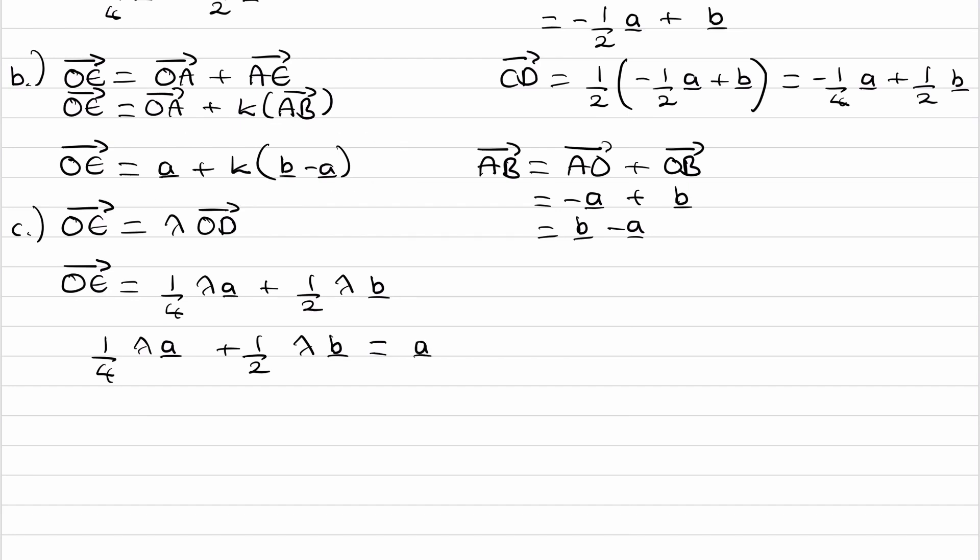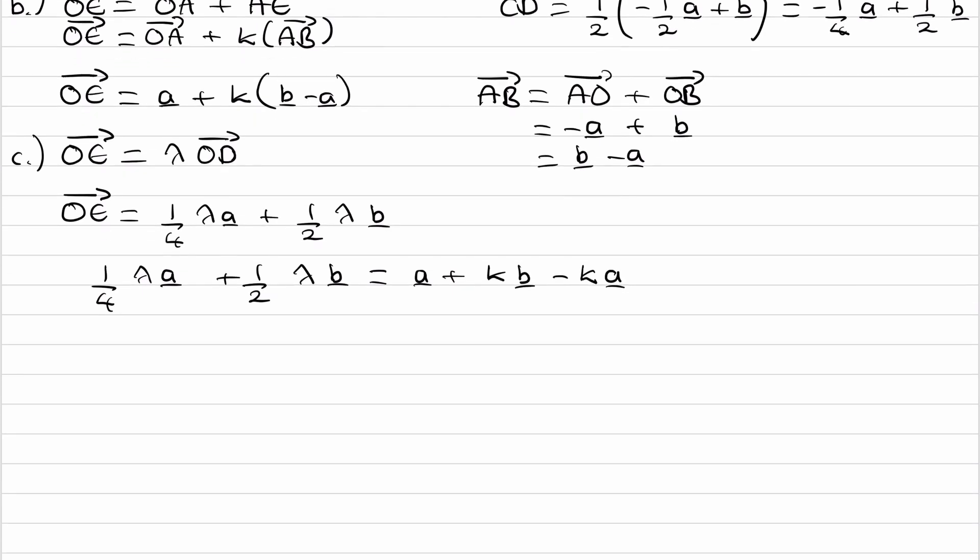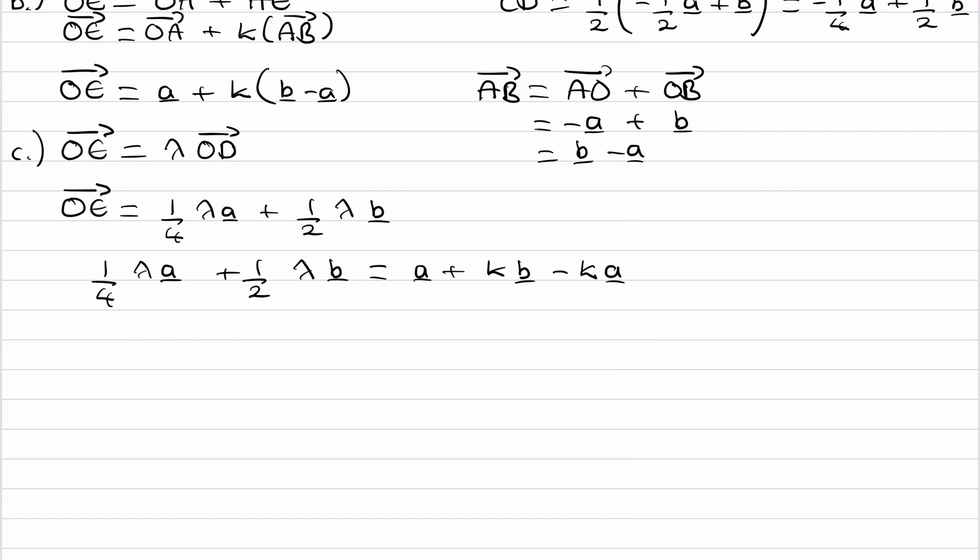I'm going to factorize the right-hand side for A. So leave the left-hand side as is, a quarter lambda A plus a half lambda B. Now these two I'm going to combine together. So factorize out the A and it becomes 1 minus K times A plus KB. If these two things are equal, the coefficients of A should be the same, and the coefficients of B should also be the same.